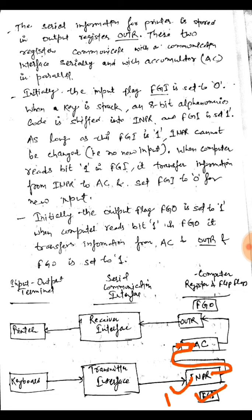Initially the output flag FGO is set to 1. When the computer reads bit 1 in FGO, it transfers information from the accumulator to the OUTR register and FGO is set to 1. This is how transmission between input-output devices using these interfaces takes place.